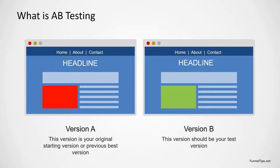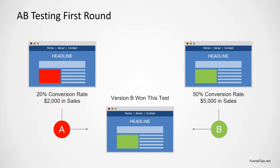In the next stage of testing, we've created our two variants and now we're going to run traffic to them to review after a period of time. We can run traffic for a period of days or for a paid volume. Then we review the outcome of those two tests. In this example, option A had a 20% conversion rate equating to $2,000 in sales, and version B had a 50% conversion rate equating to $5,000 in sales. So from this we can see that version B is our winner.